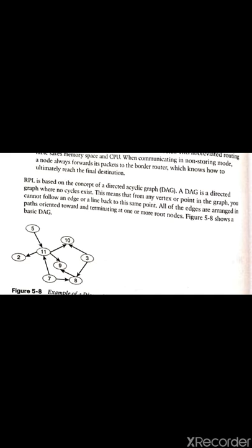This means that from any point or vertex in a graph, we cannot follow an edge or link back to that same point. For example, if you have two vertices, vertex A and vertex B, you can have an edge from A to B, but you cannot have an edge from B to A.